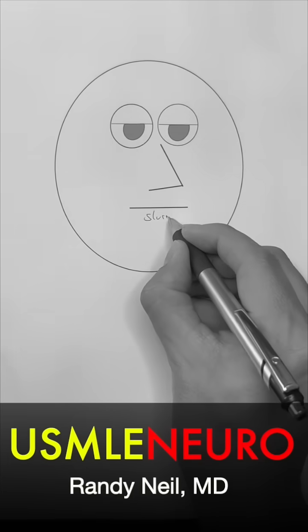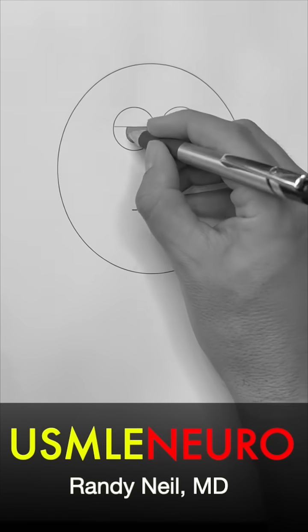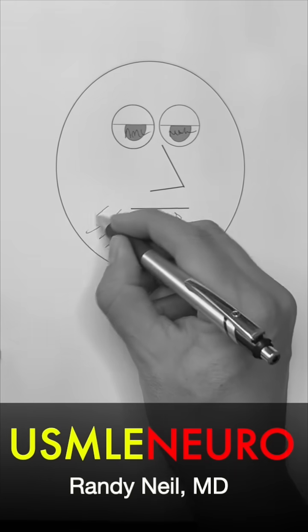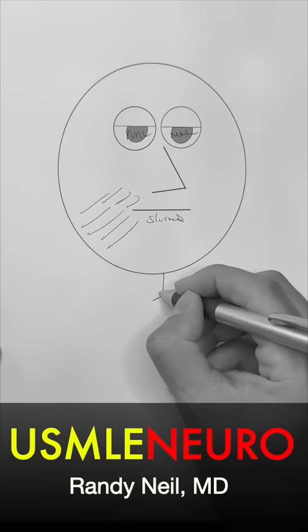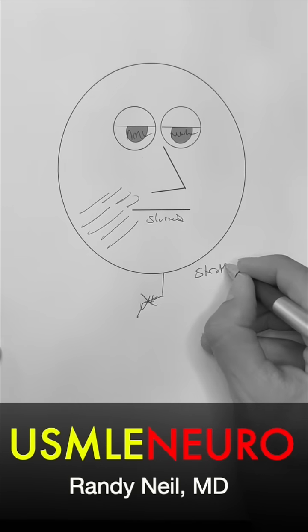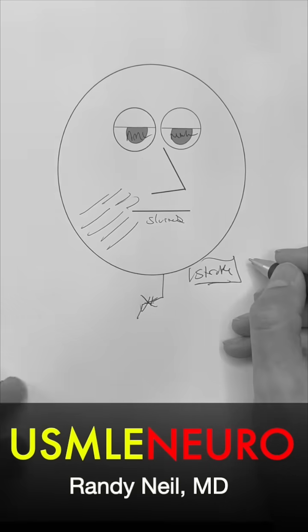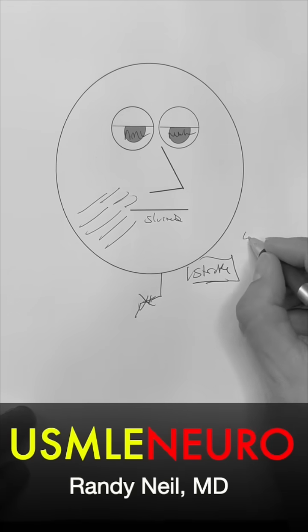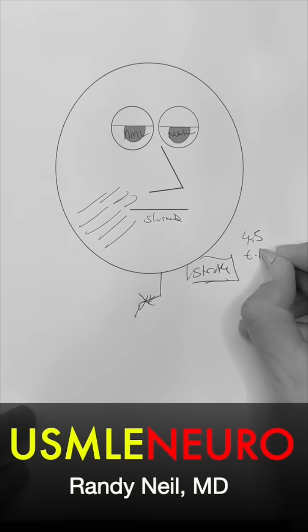All right, guys, sudden onset of slurred speech. They have normal extraocular movements, meaning they can move up, down, left, right. They had drooping of the lower face and maybe even impaired right upper extremity. What am I thinking? Stroke, right? You do CT scans. CT scan looks for blood. If CT scans normal, then you're thinking ischemic stroke. If they're within the 4.5 hours, you give them TPA.